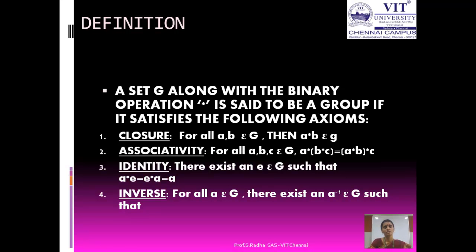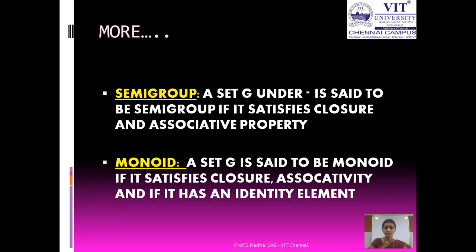Inverse. For all a belonging to G, if we can find an element a inverse belonging to G such that a star a inverse is equal to a inverse star a is equal to e, the identity element, then a inverse is called the inverse of a. This should hold for all elements of G. If all four axioms are satisfied, then (G, star) may be called a group.